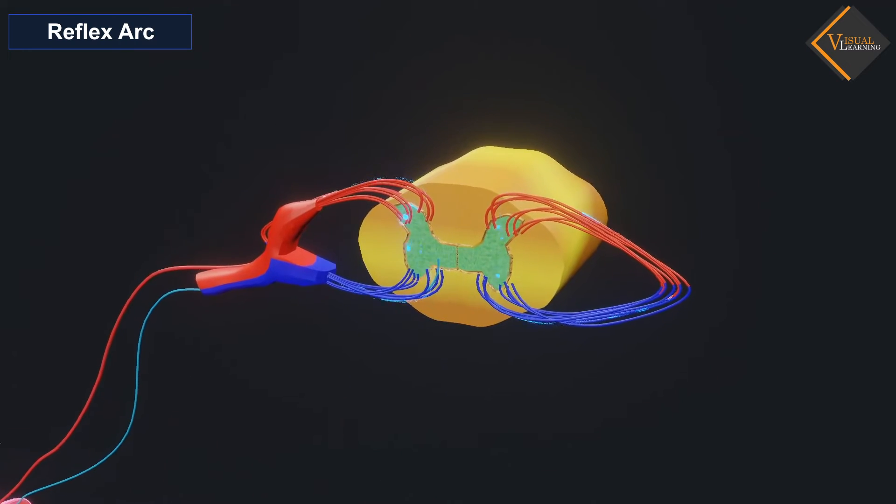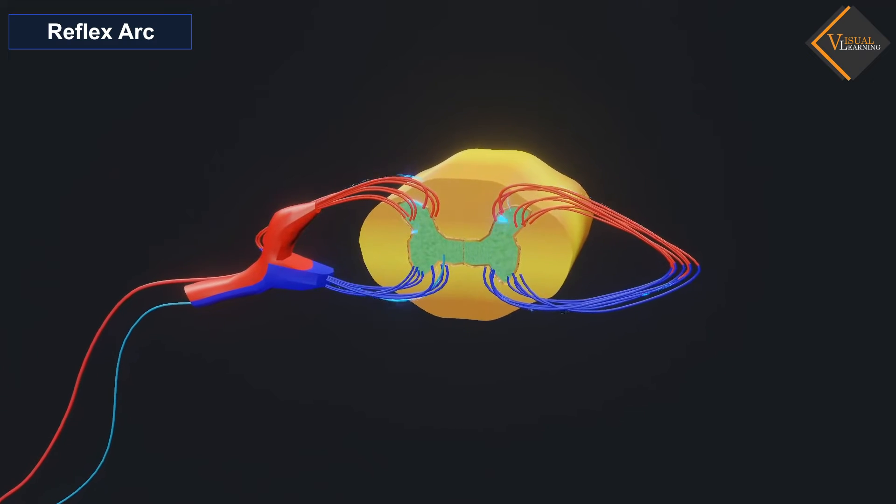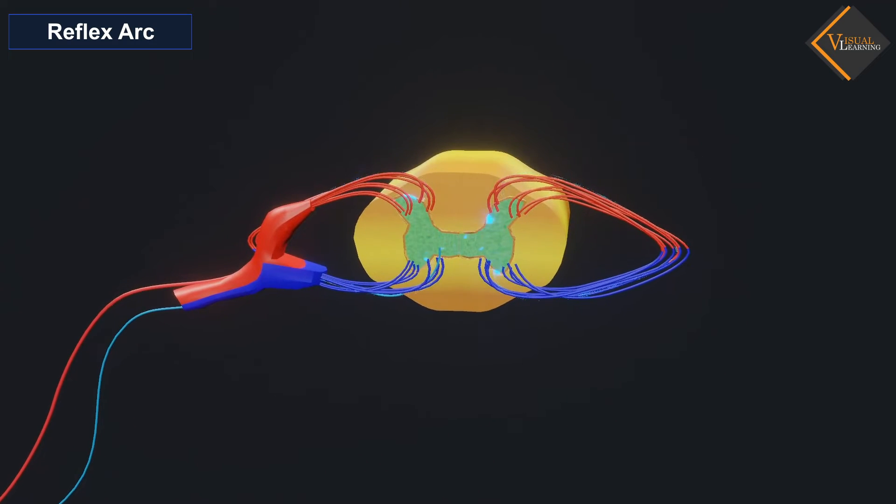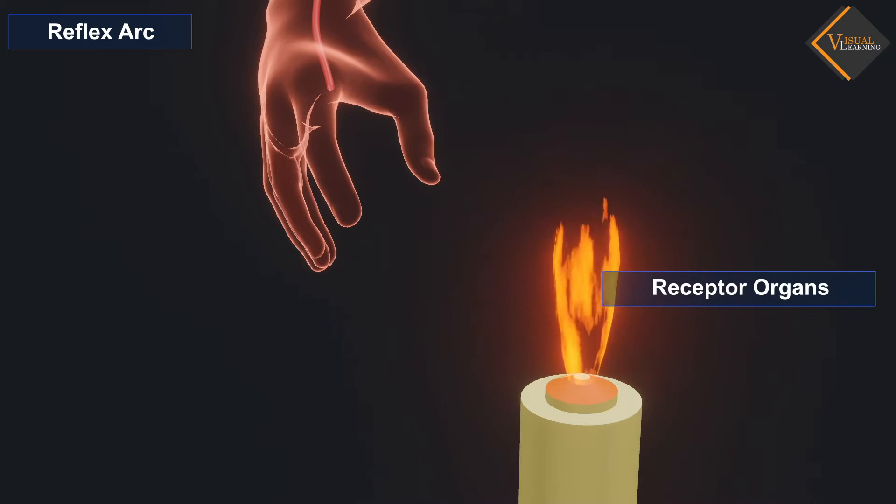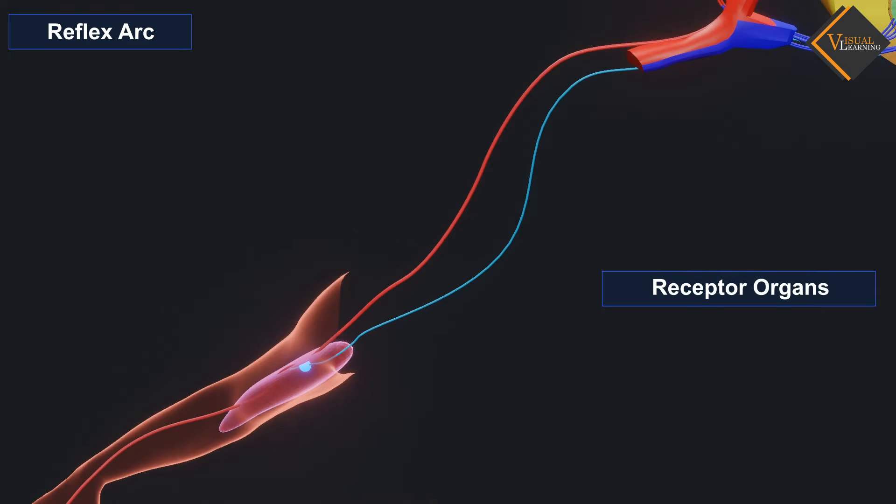The whole process of reflex action involves some important components. They are receptor organs, sensory neurons, motor neurons.